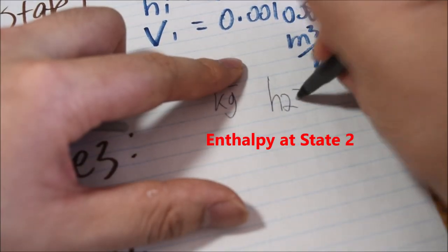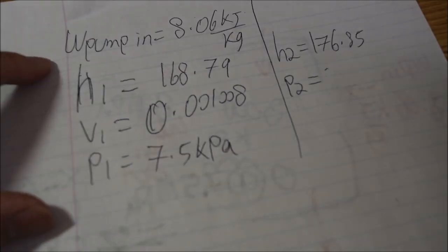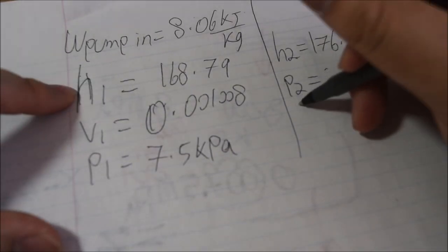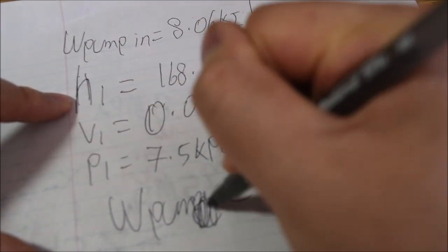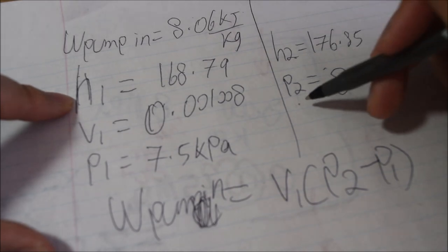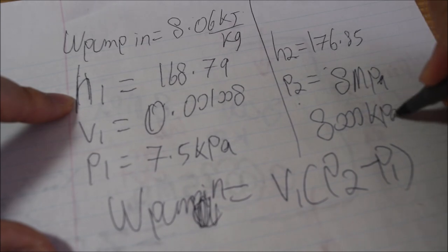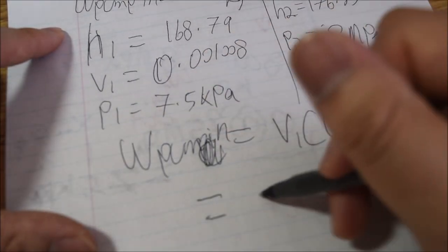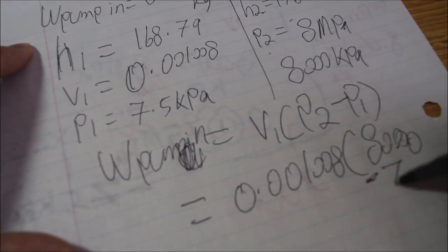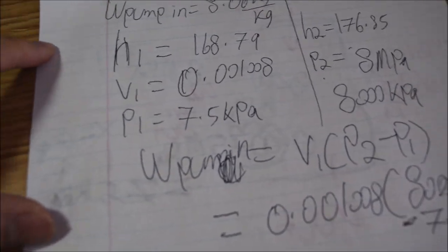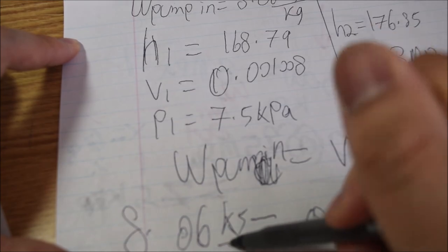At state 2, to check if H2 is correct, we use the formula V1 times (P2 minus P1) equals work pump in. We are given that the pressure at state 2 is 8 megapascals, which is 8000 kilopascals. Doing the calculation, we confirm that the result is indeed equal to 8.06 kilojoules per kilogram.